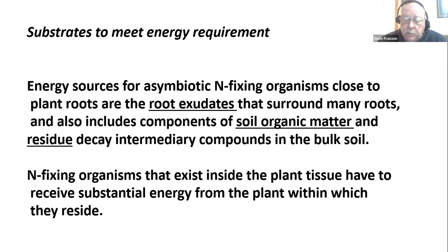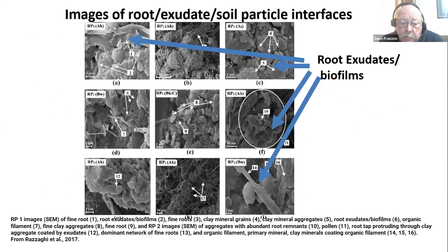Root exudates — these are pictures from a 2017 publication that did some really nice work. The arrows point to roots that are covered in material, and that material is the root exudates. Lots and lots of organisms live on that exudate.